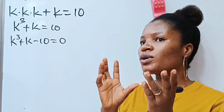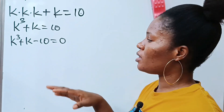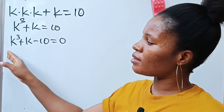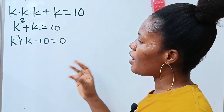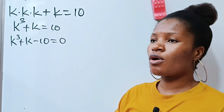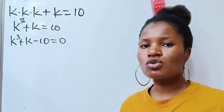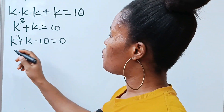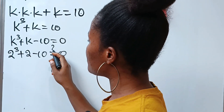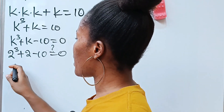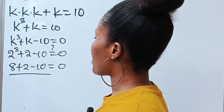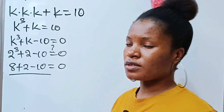I like to use trial and error first to find the value of k that satisfies this equation. That value is k = 2. By trial and error we would have tried 1, minus 1, then 2. When we get to 2: 2 to the power of 3 plus 2 minus 10 equals 0. Since 8 plus 2 minus 10 equals 0, this checks out.